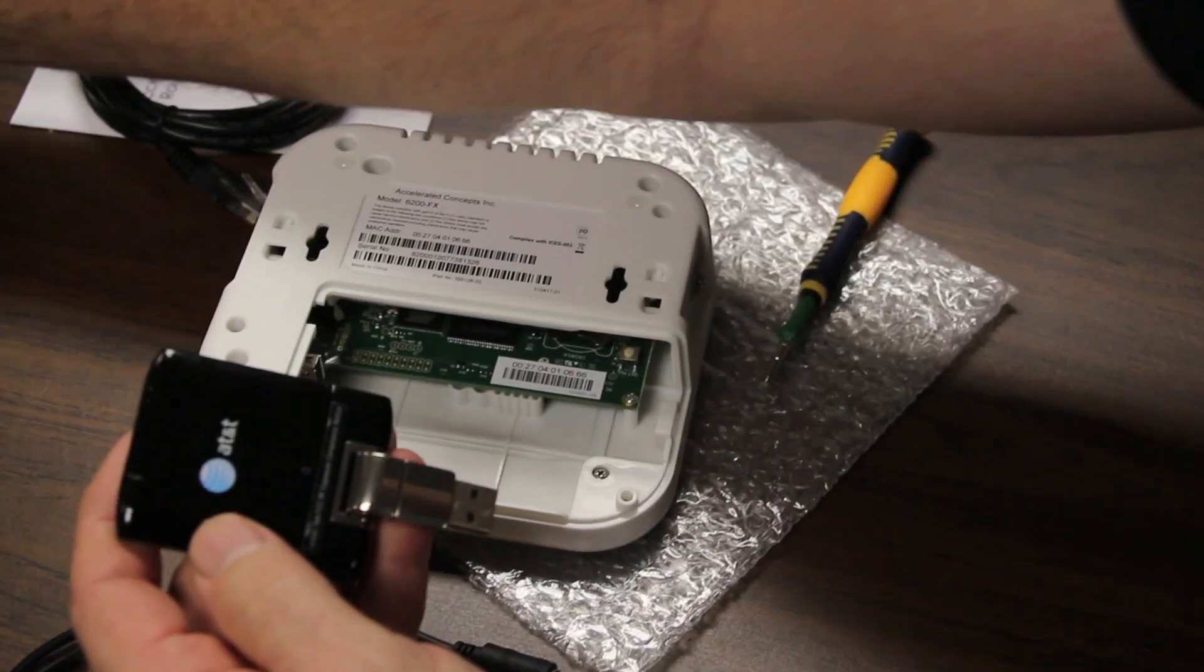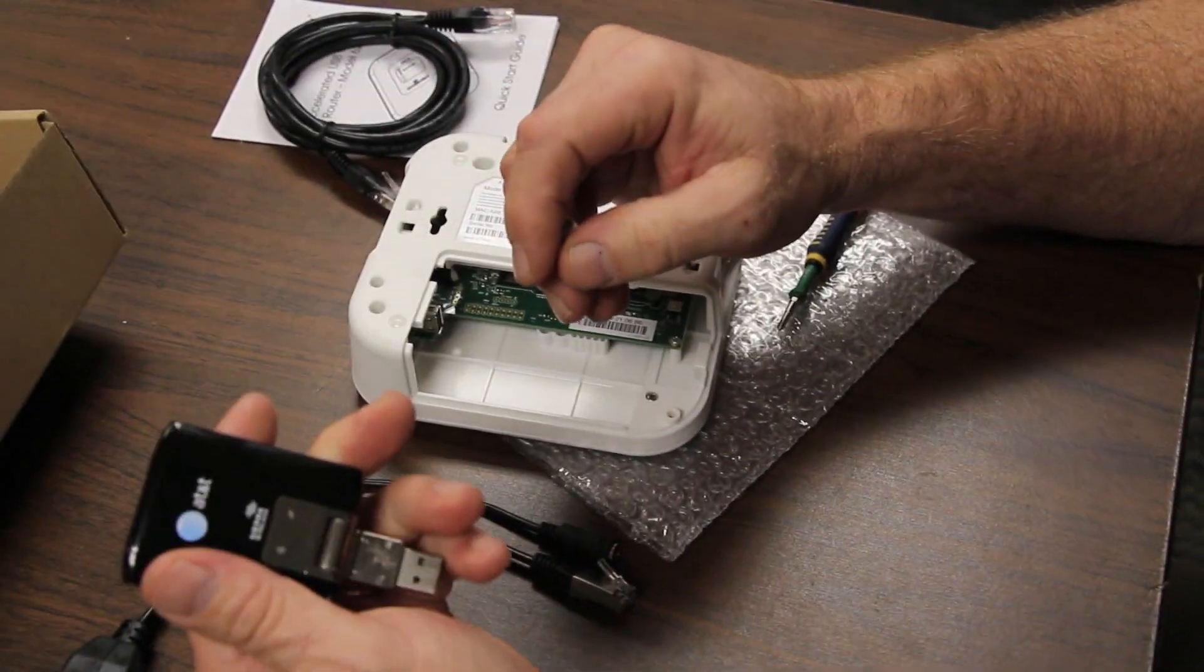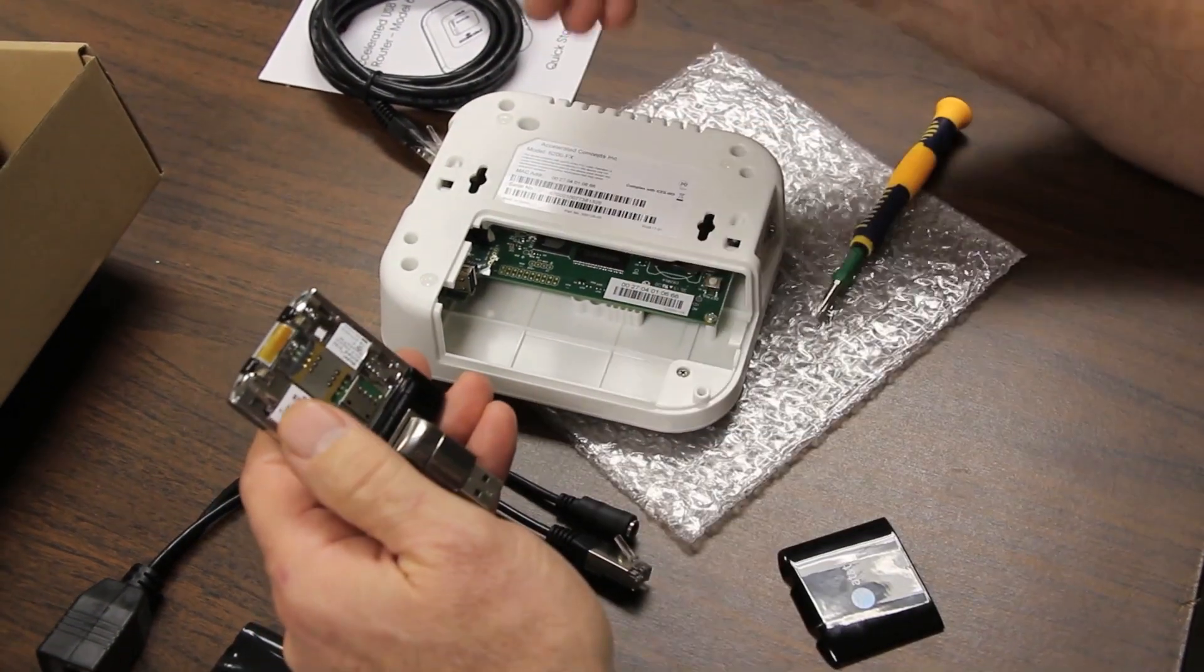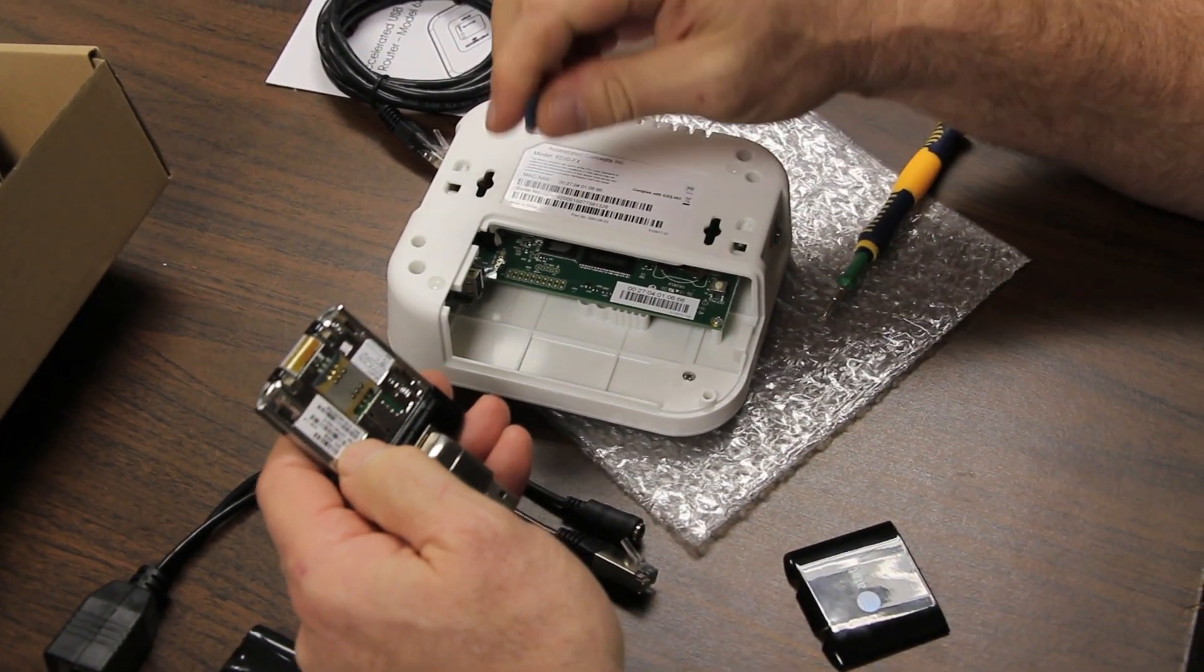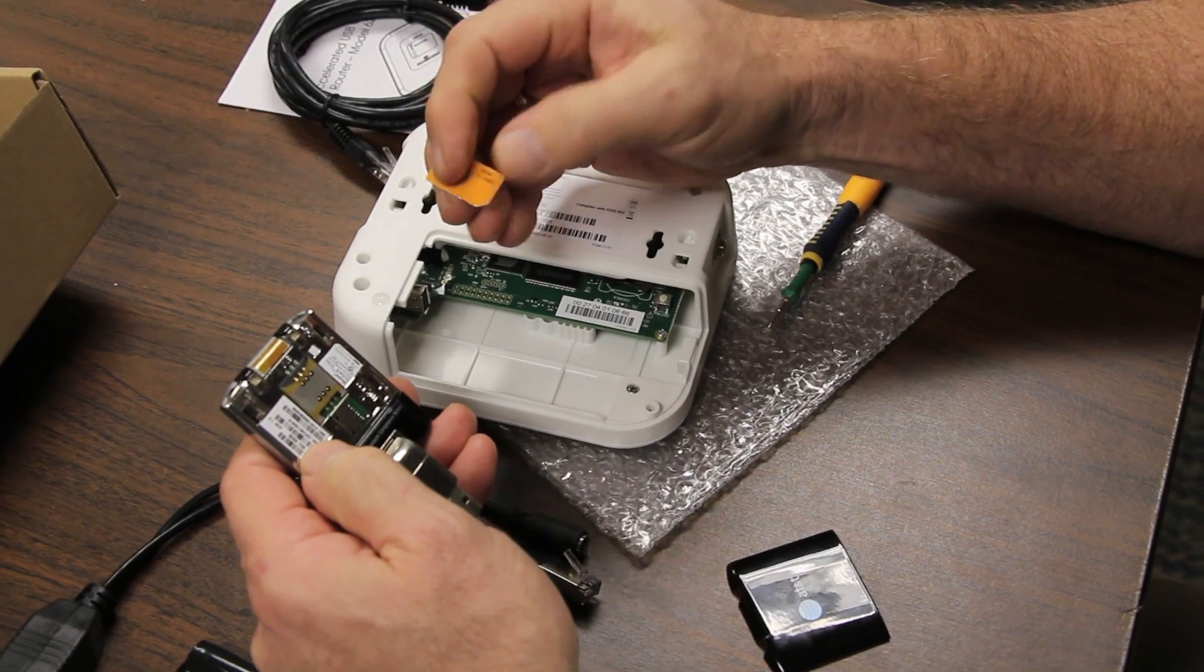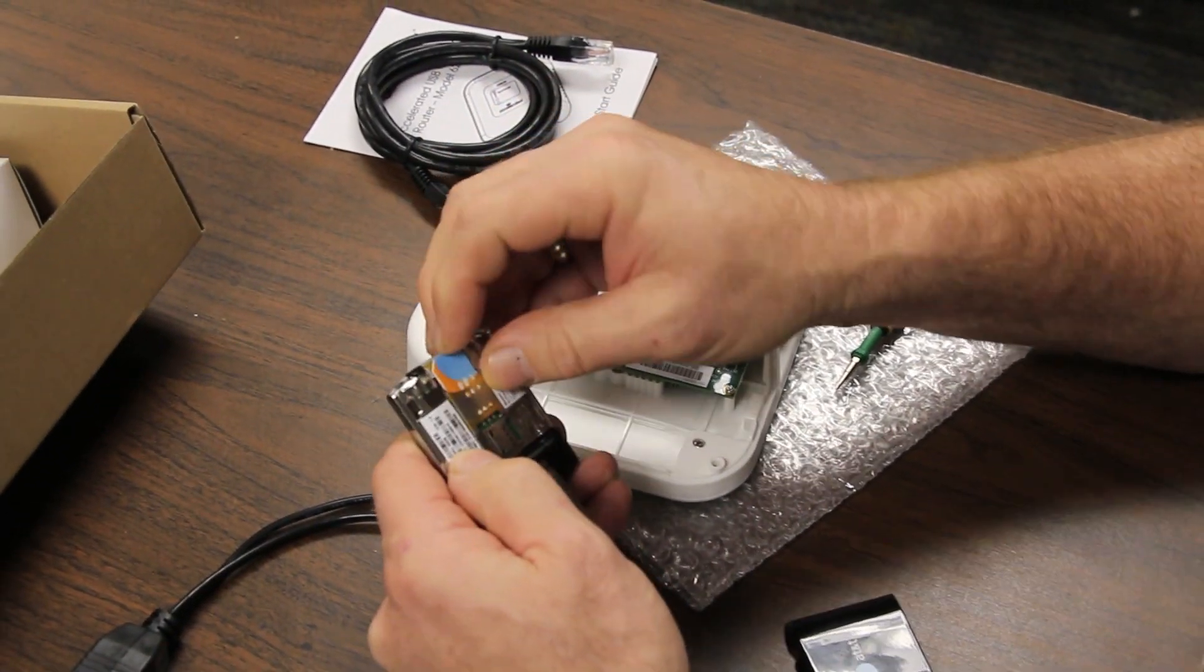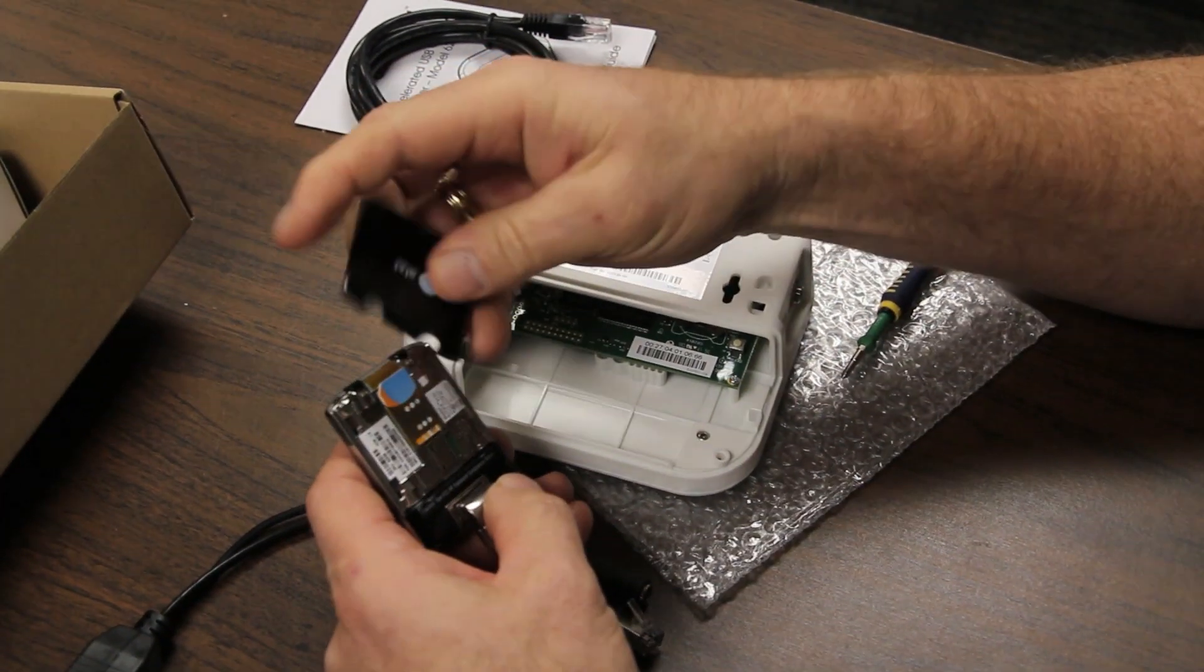Now we open the compartment. What we're going to test today is an AT&T radio, this is a Momentum radio, it's LTE capable. There is a whole list of radios that this product supports, you can get them on our website at acceleratedconcepts.com.